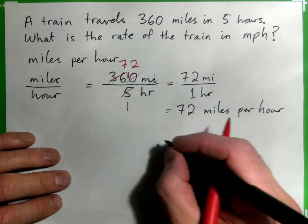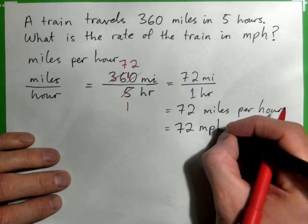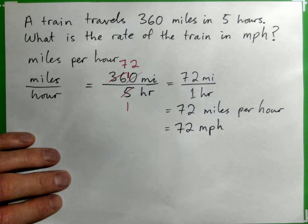Which can be written 72 miles per hour. Like for every hour, we go 72 miles. Or 72 MPH. Could it be 72 to 1 hour?